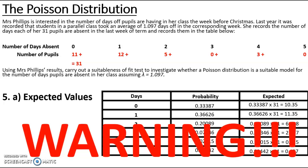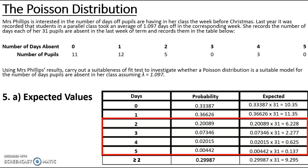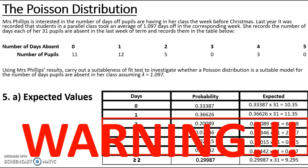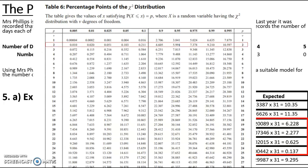A warning applies here: the chi-squared distribution is not suitable if expected values are less than five. In this question there are three expected values below five, so classes must be combined. Combining three, four, and five still doesn't reach an expected value of five or more, so all four lower values are combined into a 'greater than or equal to two' category. This reduces n to three options (zero, one, or ≥2), giving degrees of freedom of two.